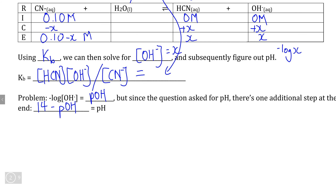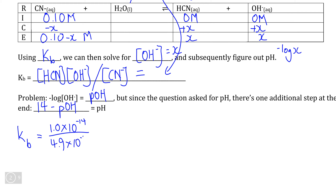Now that we have our Kb expression, we can put in all of our values from the equilibrium row of the ICE table. We know that Kb equals 1 × 10⁻¹⁴, our Kw value, divided by 4.9 × 10⁻¹⁰, the Ka value of the conjugate acid. Each of the concentrations of our products is X, so X times X is X squared, and our concentration of reactants is the initial concentration 0.10 mol/L minus X.